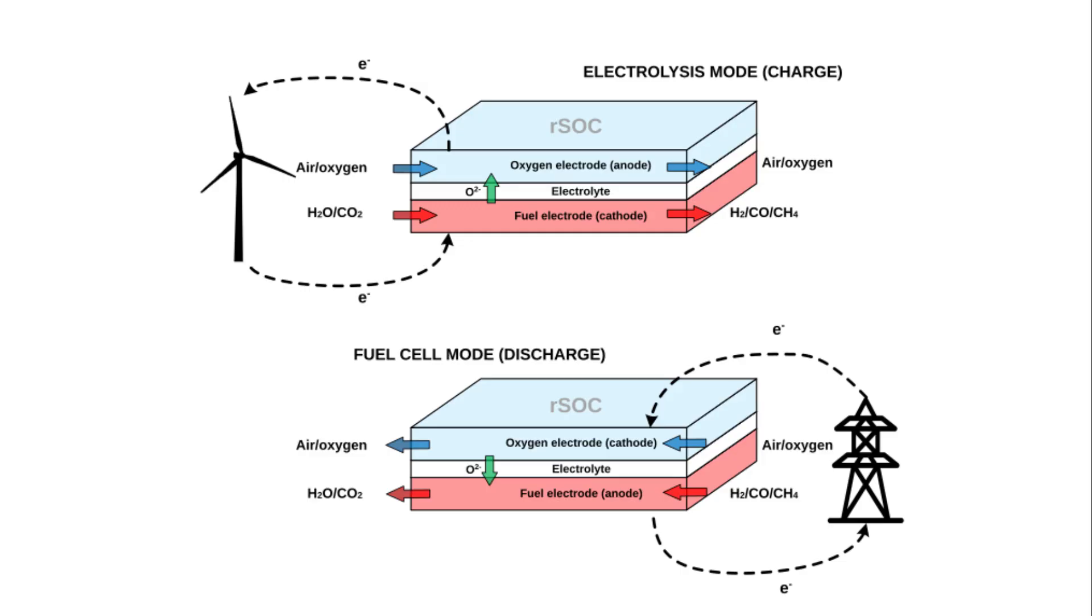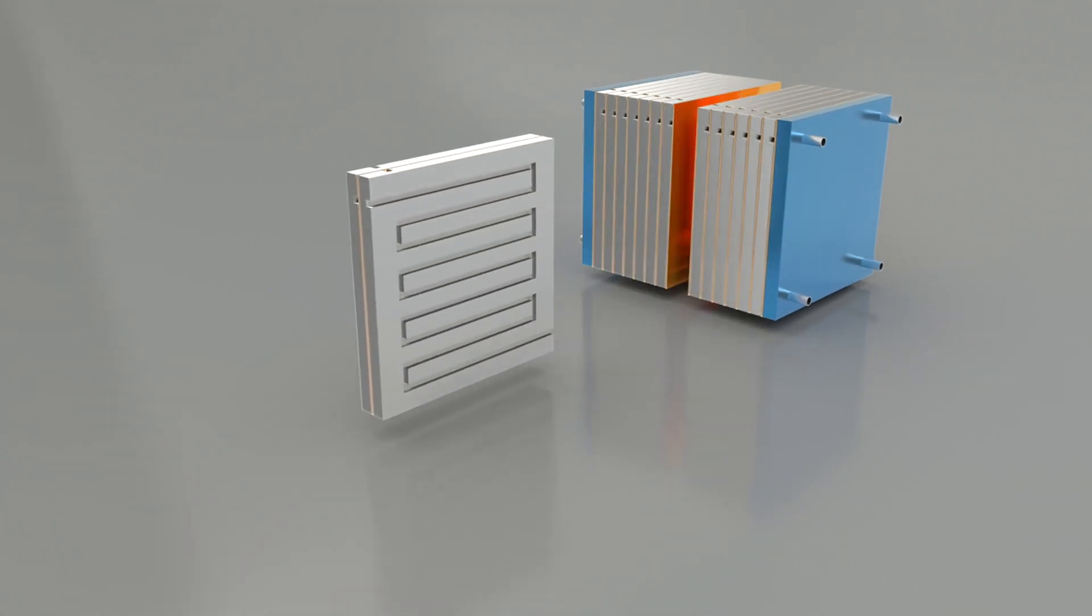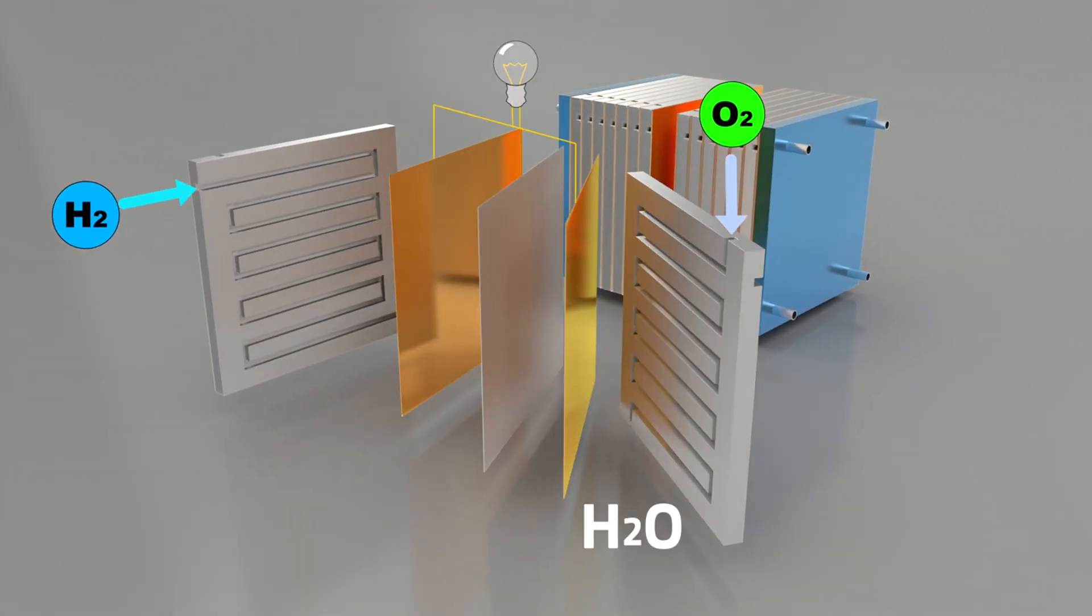RESSOFCs are advanced electrochemical devices that can operate in two modes: fuel cell mode (SOFC), where they generate electricity by oxidizing a fuel like hydrogen, and electrolysis mode (SOEC), where they use electricity to split water into hydrogen and oxygen. This dual function is made possible by a solid ceramic electrolyte sandwiched between two electrodes. These cells work at very high temperatures, between 600 degrees Celsius and 900 degrees Celsius, making them highly efficient compared to conventional batteries or fuel cells.